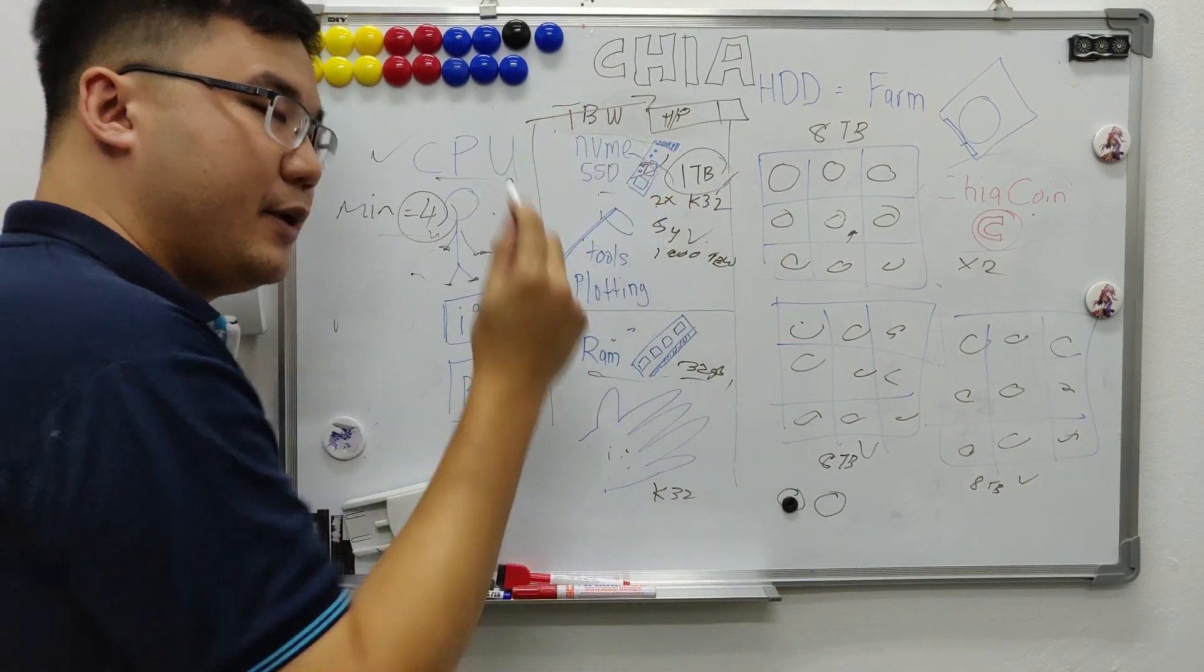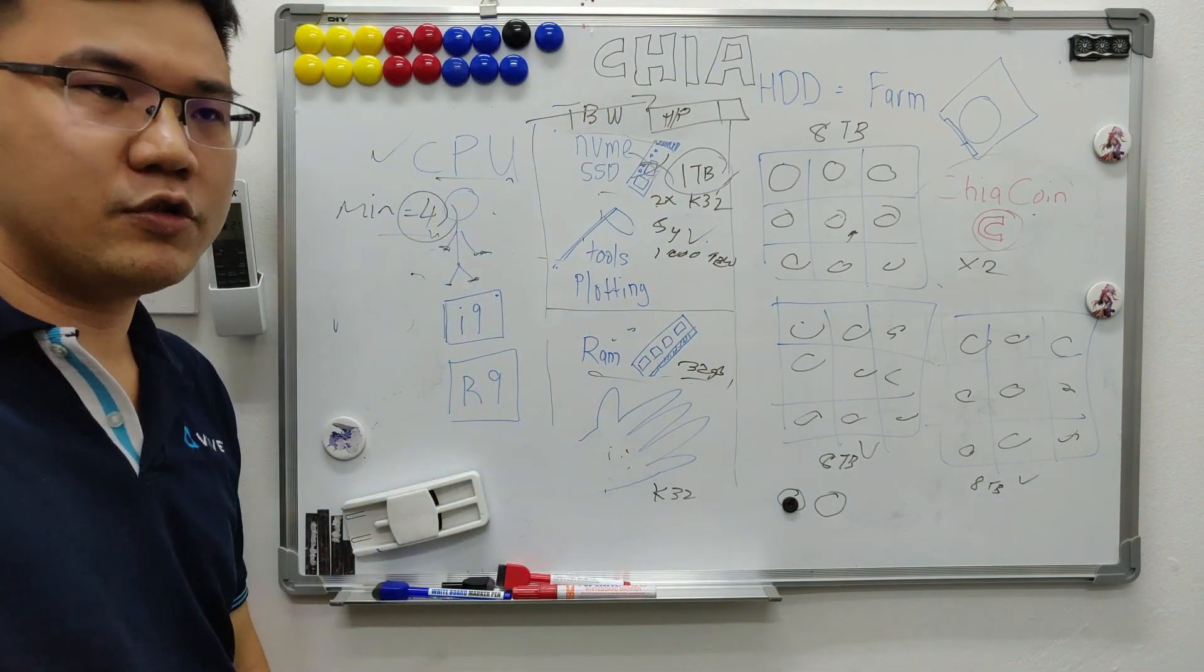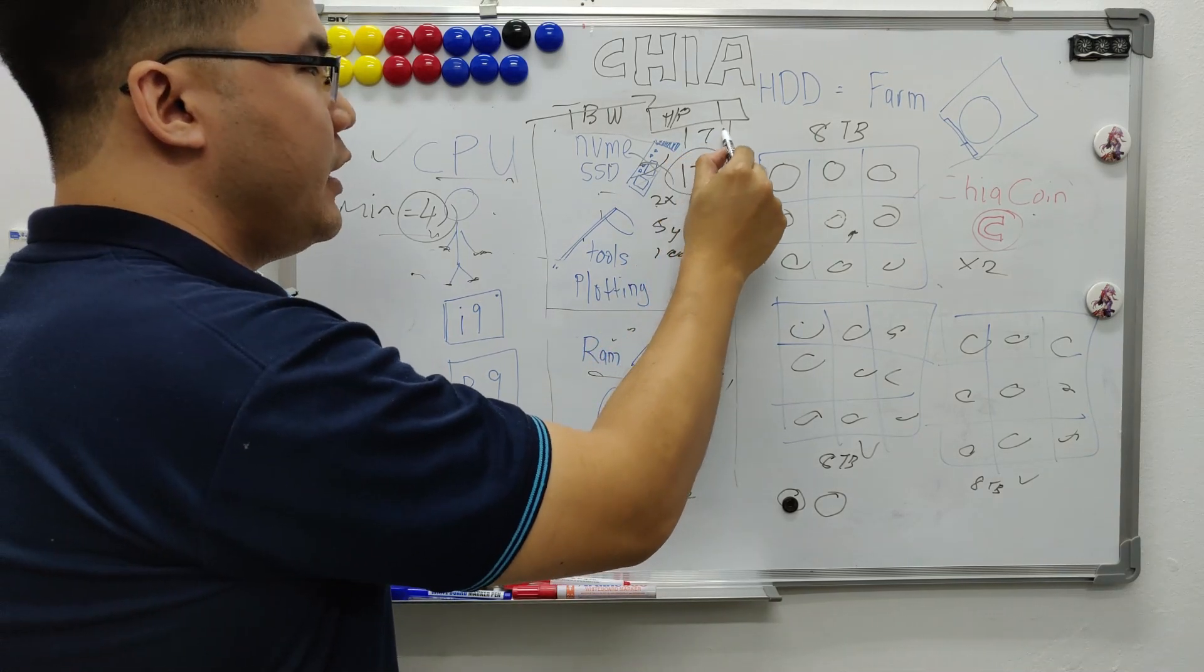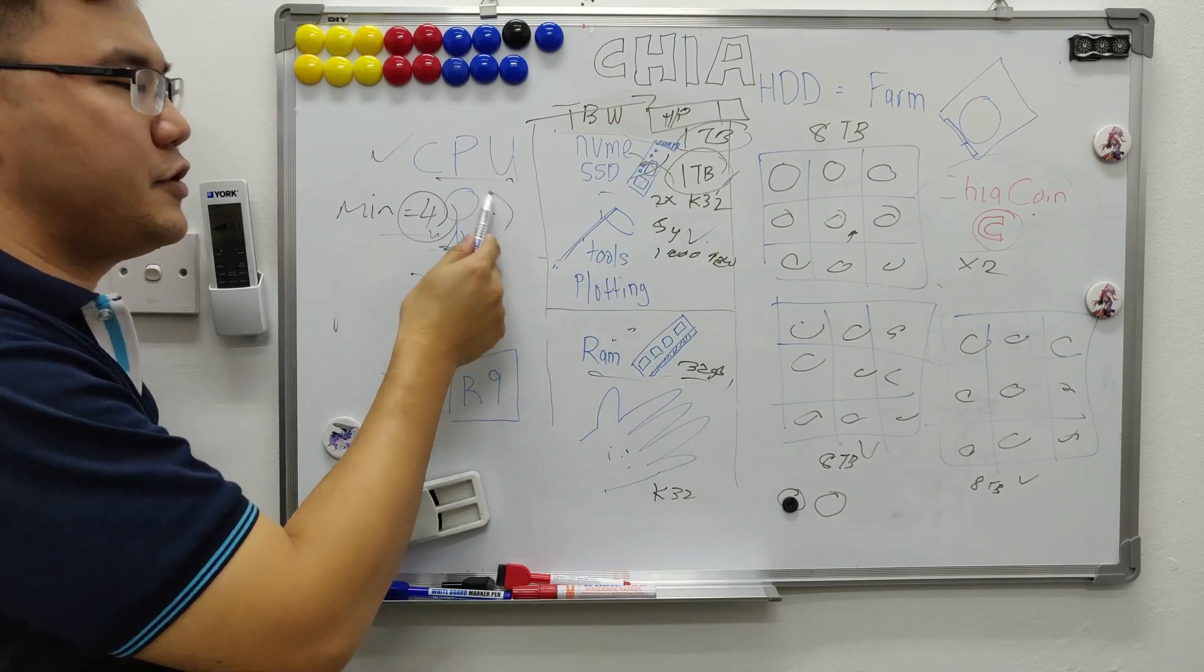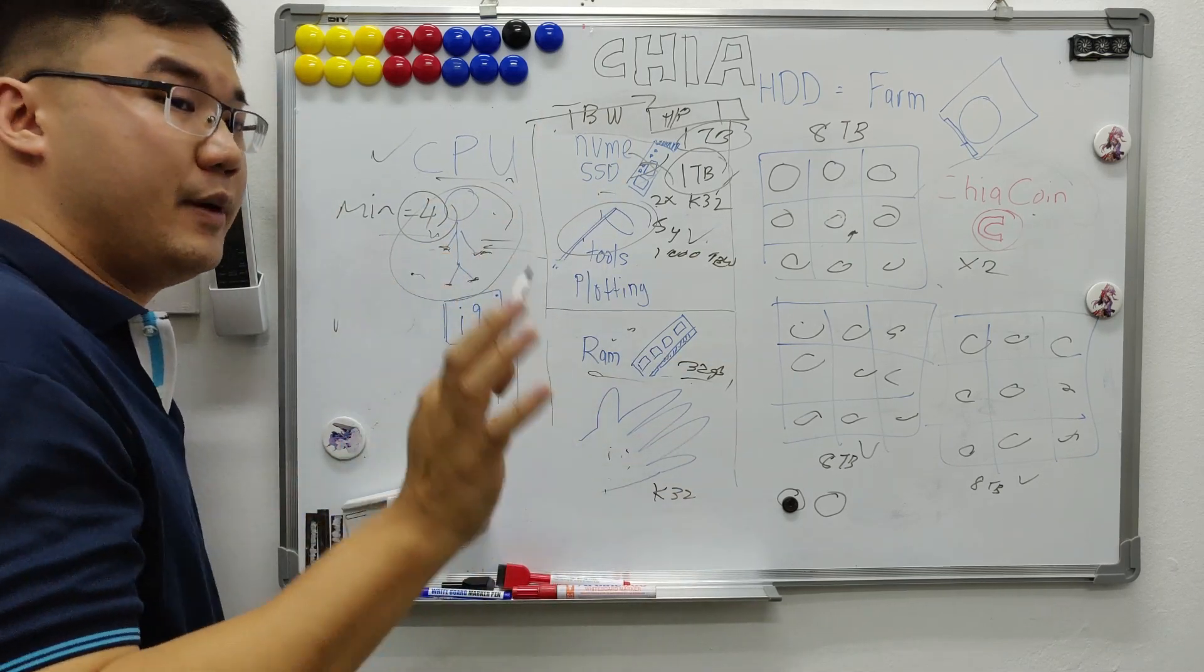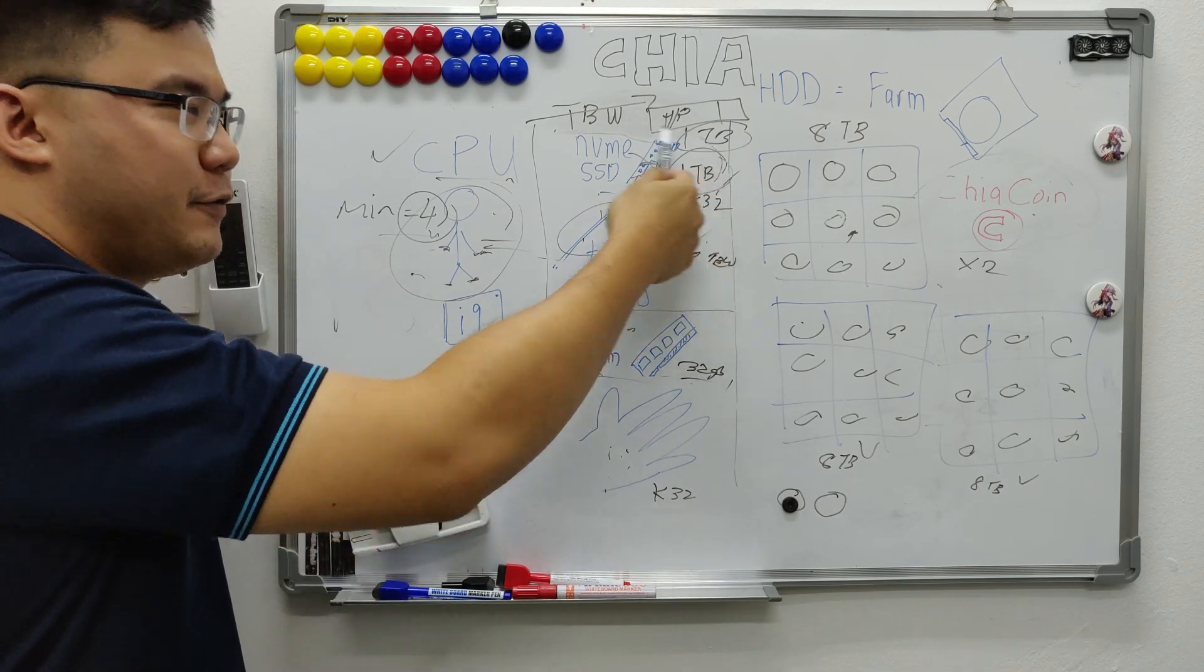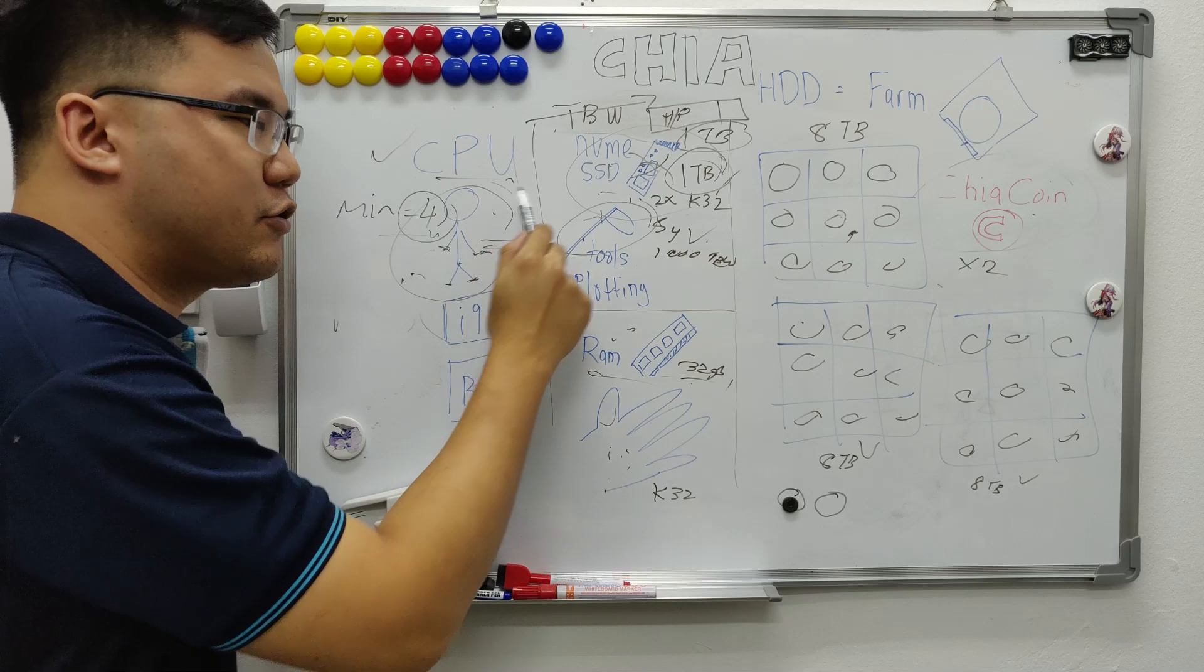And 1 TB NVMe SSD, if your motherboard supports 2 slots of maybe Gen 3 or Gen 4, you can use 1 TB each. So you can plot more. The more, the merrier. Because you have a lot of workers, if you don't have enough of shovel, you can't do as much job. Some workers will be left there idle. So you need more shovel, and if shovel too much, not enough worker, not good also. So as long as these 3 is balanced, you plot, optimize plotting.